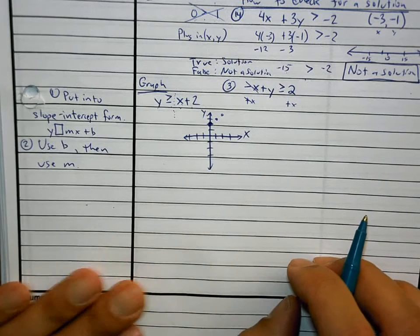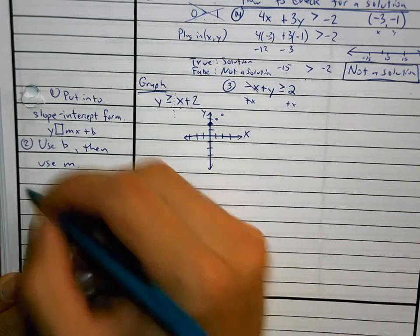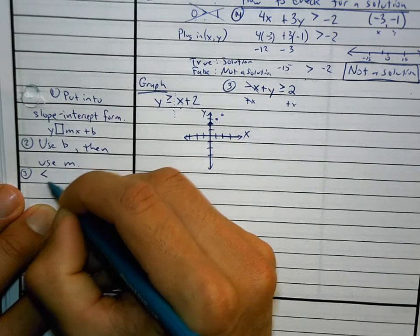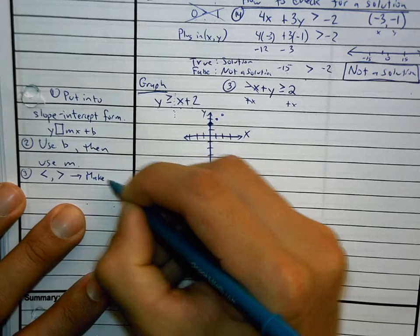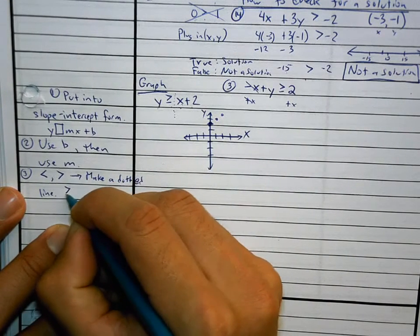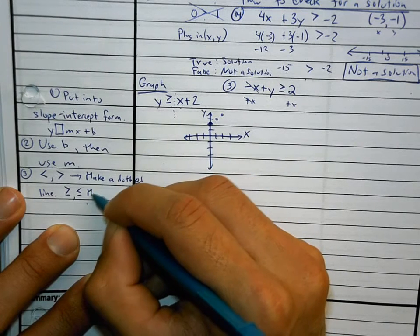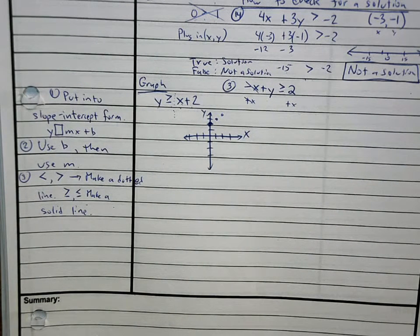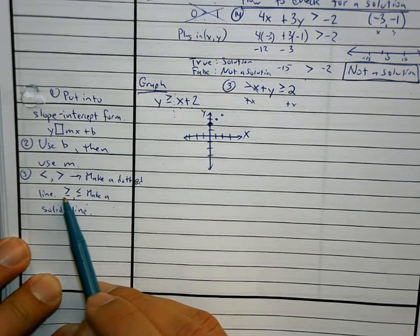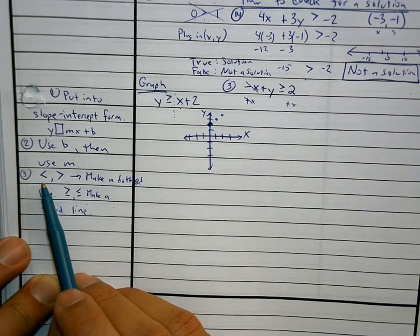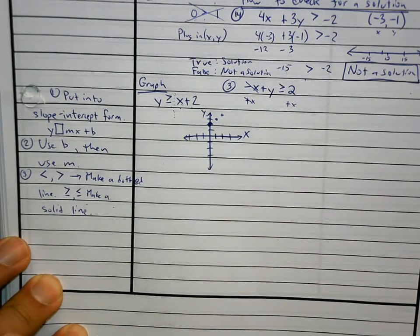Before you do anything else, don't forget step three: if it is less than or greater than, we make a dotted or dashed line. If it's less than or equal to, or greater than or equal to, we make a solid line. Basically, if there's a line underneath the inequality sign, then that line needs to be solid — it means or equal to, meaning anything on the line is in bounds.